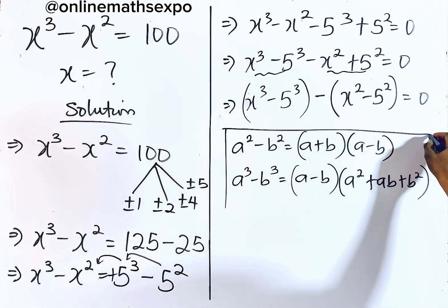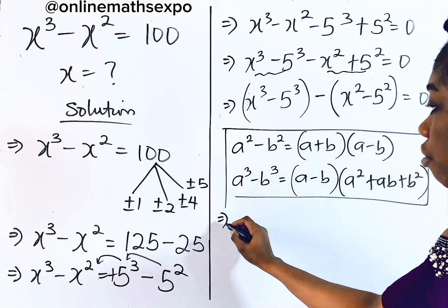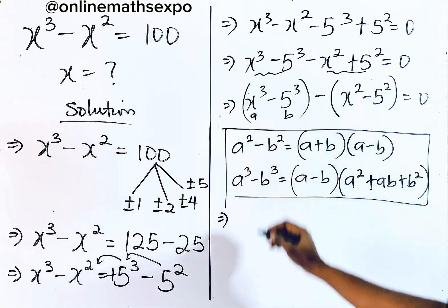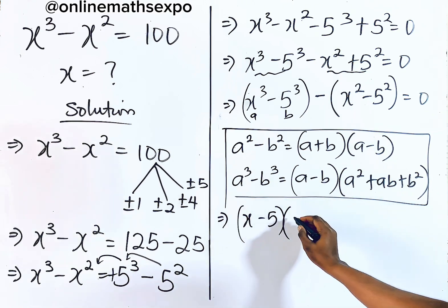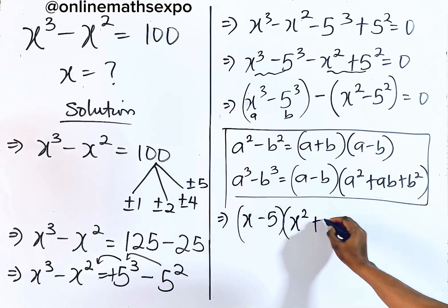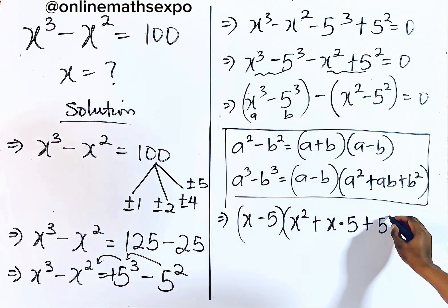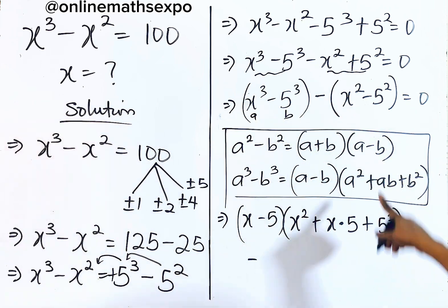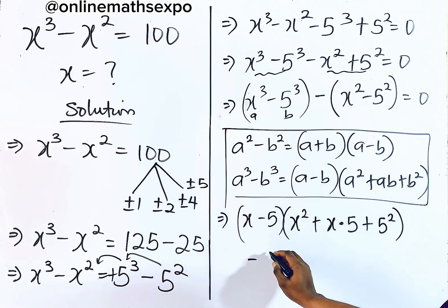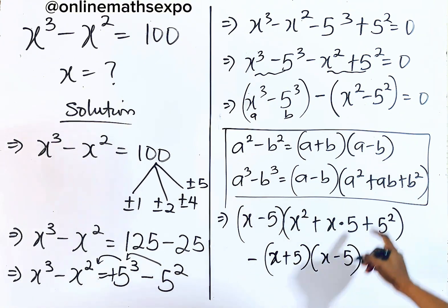Applying these identities: x cubed minus 5 cubed gives (x−5)(x²+5x+25), and x squared minus 5 squared gives (x+5)(x−5). So we have (x−5)(x²+5x+25) minus (x+5)(x−5) equals 0.